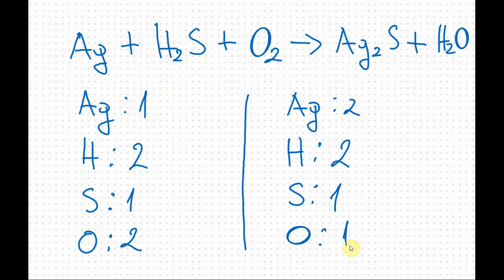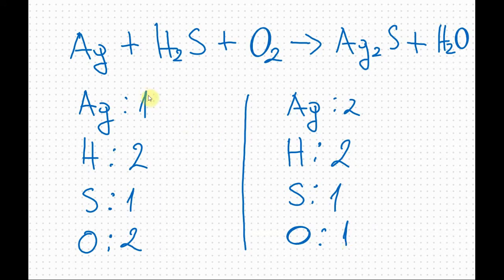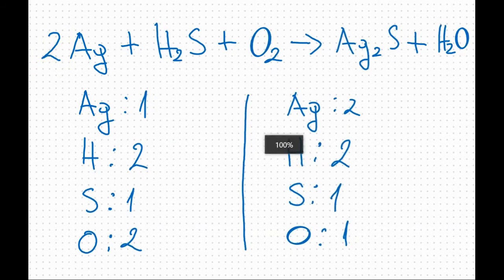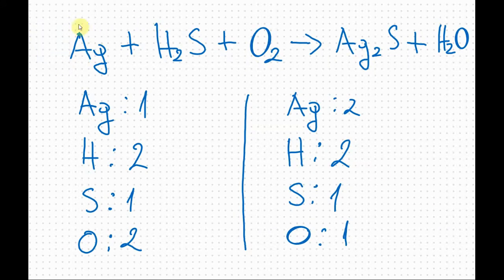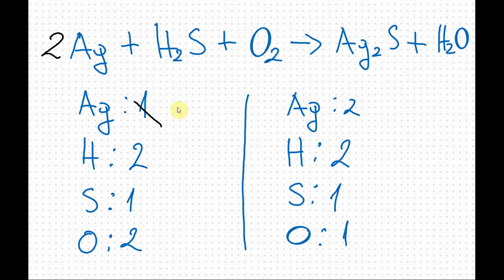Before going further, one of the rules for balancing is to balance the hydrogen and oxygen last, in that order — so hydrogen then oxygen. In this case it means I will do the silver first. I will add a coefficient of two in front of the silver and change the chart to two. Now the silver is balanced.